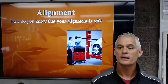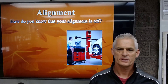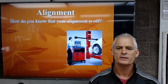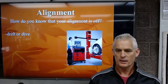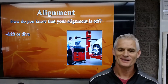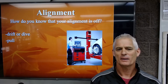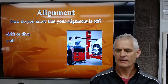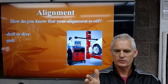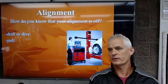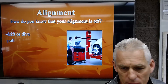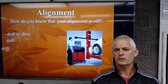We're going to begin talking about alignment today. A general question: how do you know your alignment's off? You might let go of the steering wheel and it drifts slowly to one side, or it dives for the ditch. A drift is when it wanders within several hundred feet; a dive is when you go straight into the ditch; a pull is somewhere between.